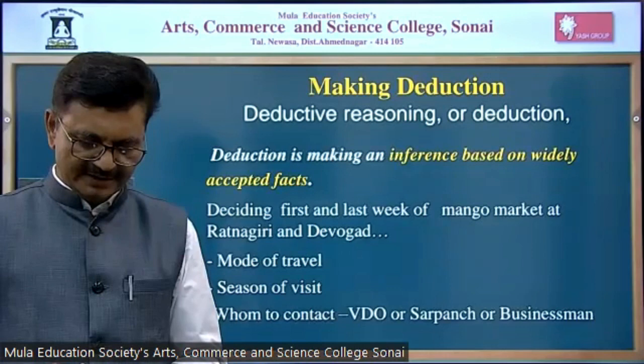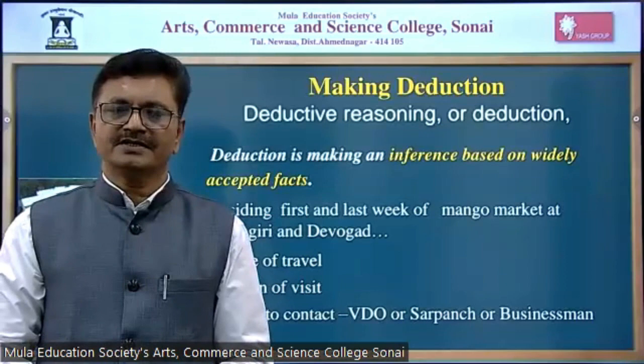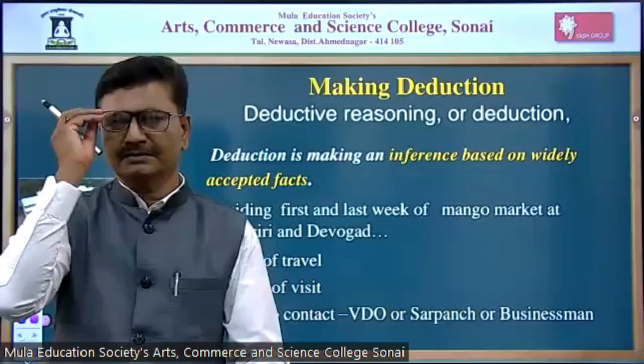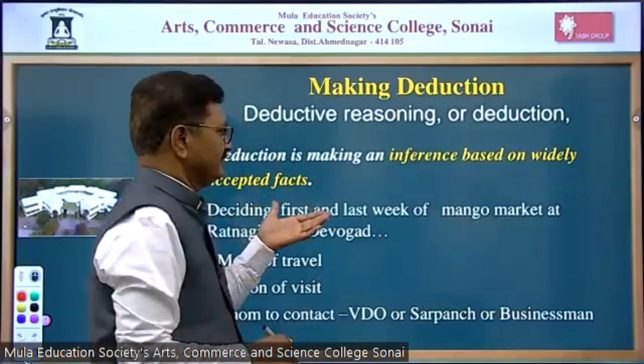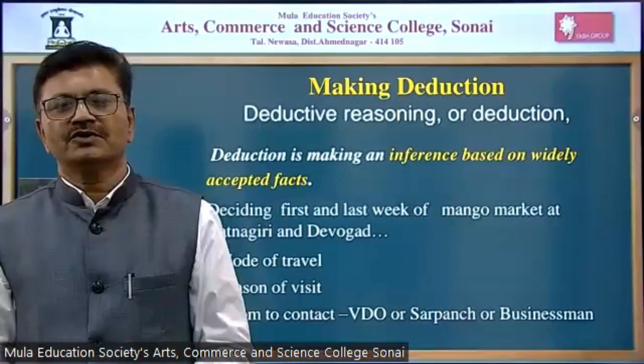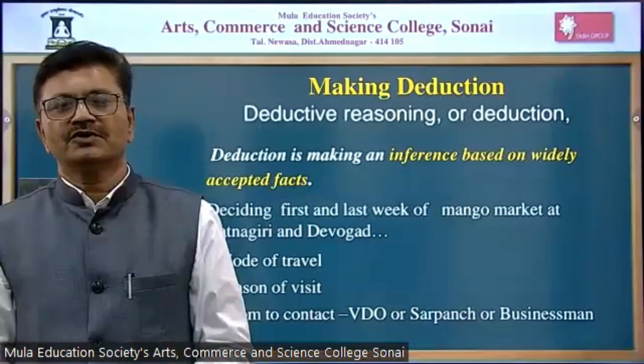Once you have analyzed the data and have results, you have to make a deduction. Making deduction means deductive reasoning — making an inference based on widely accepted facts. From your data and results, you have to deduce certain things and come to a conclusion. You have to find facts from your results and deduct conclusions from those widely accepted facts.